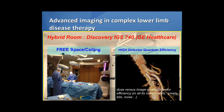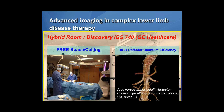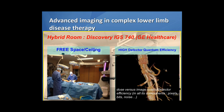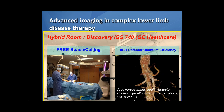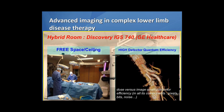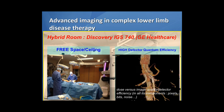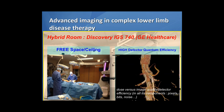On the other hand, we want to have a perfect imaging quality. The best parameter to refer to this image quality is the dose versus image quality over detector efficiency in all its components — pixels, bits, noise, and more difficult parameters for a vascular surgeon. We call it detector quantum efficiency, and I can say that in the Discovery IGS it's one of the highest detector quantum efficiencies on the market nowadays.